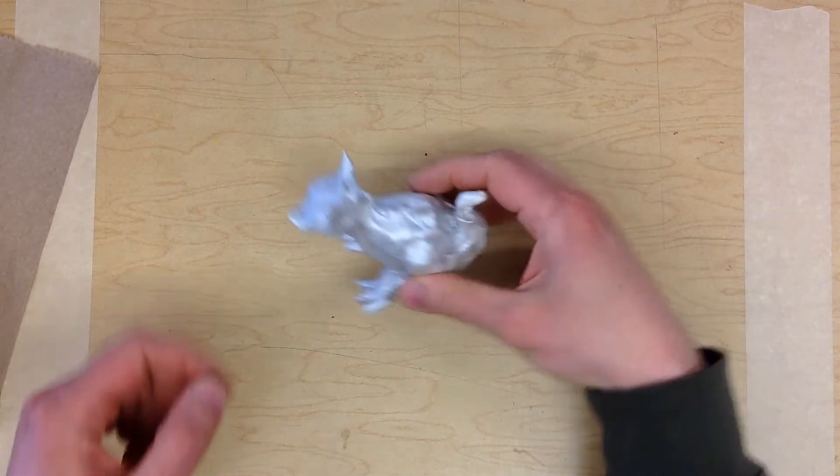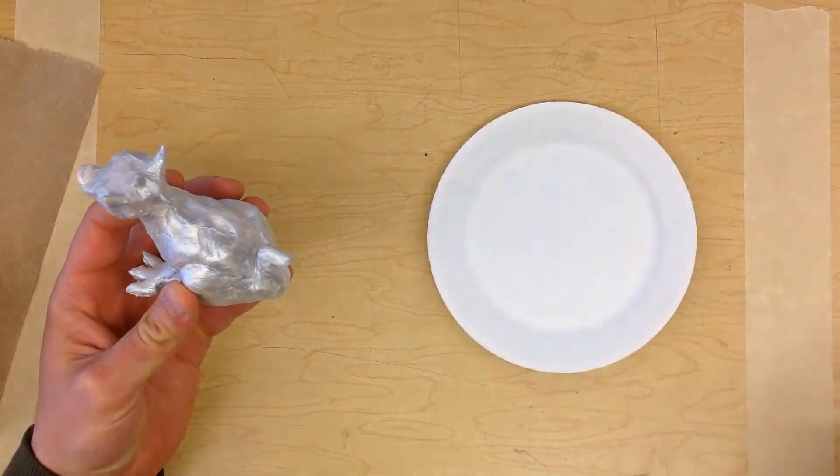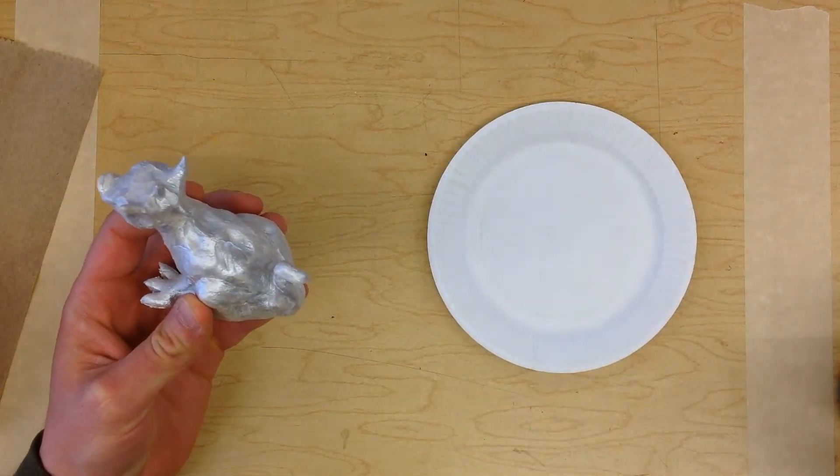My gargoyle is all dry and now it's all silver. I'm going to get some black tempera paint and put it on a paper plate.